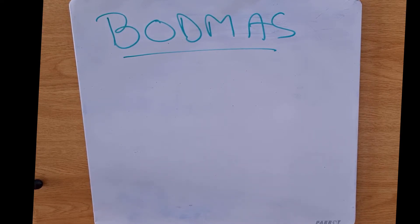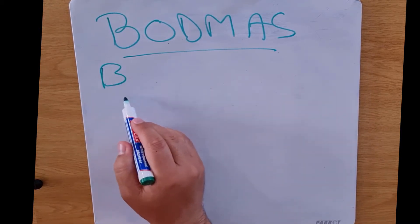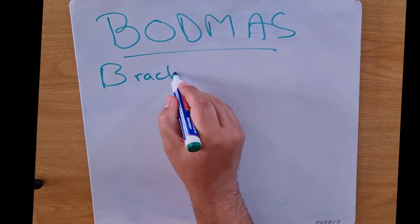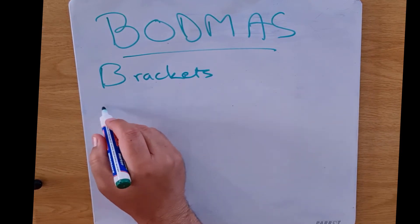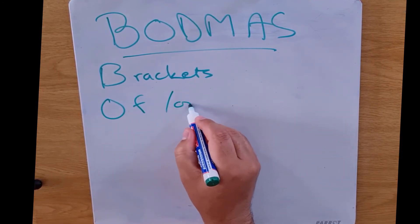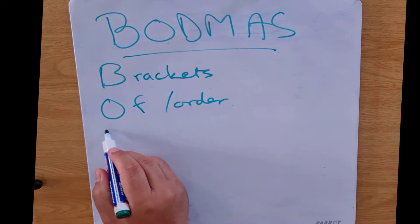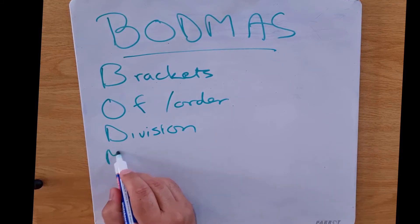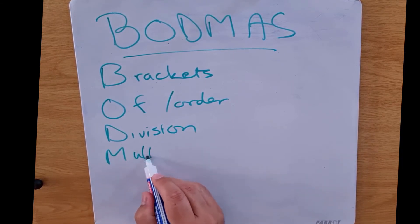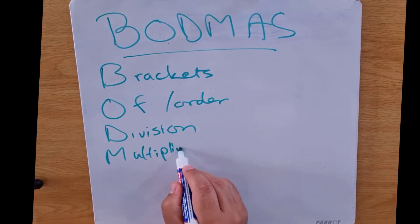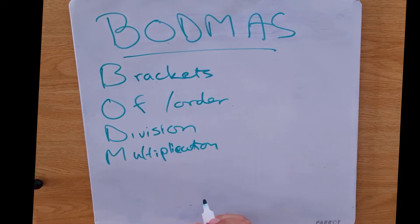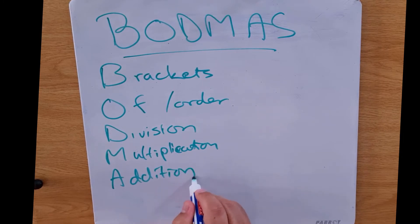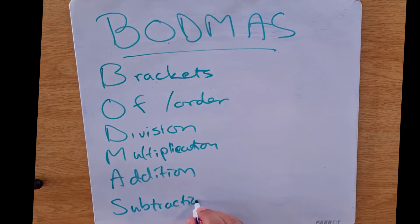So first of all, what does BODMAS stand for? Well, B is for brackets, O for of or order, D for division, M for multiplication, A for addition, and last but by no means least, S for subtraction.